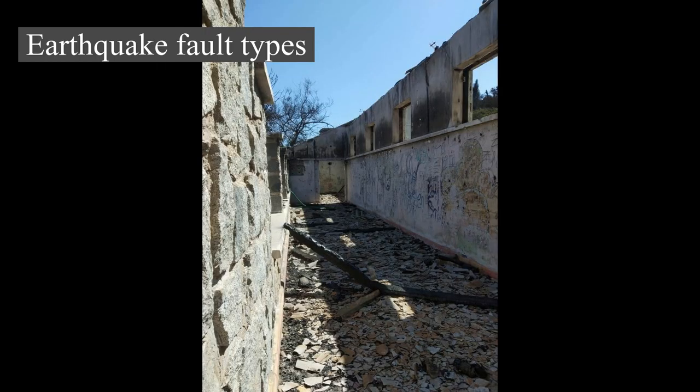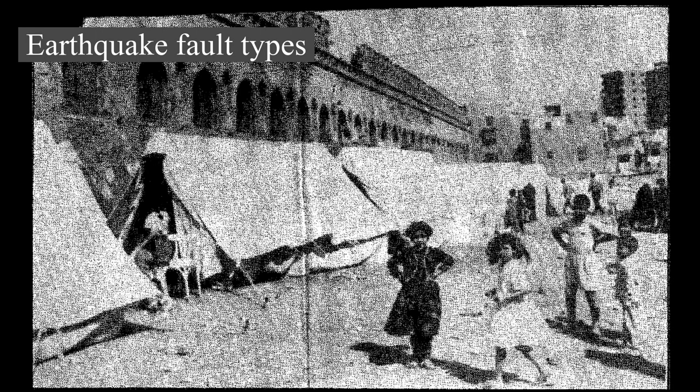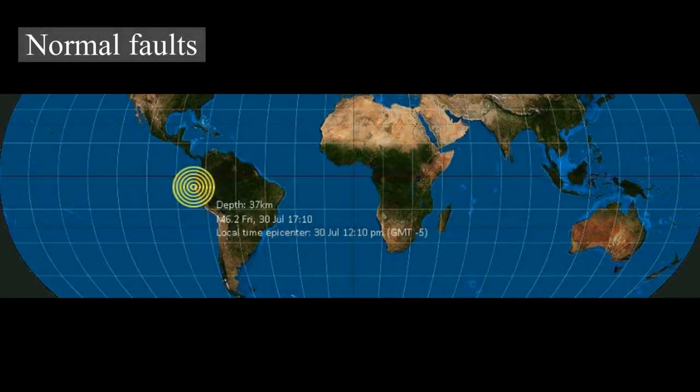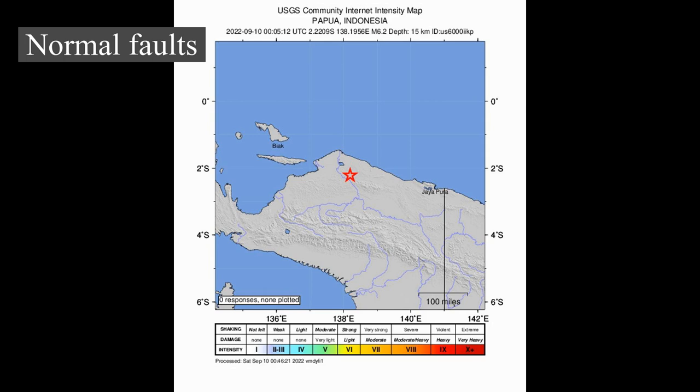The longest earthquake ruptures on strike-slip faults, like the San Andreas Fault (1906), the North Anatolian Fault in Turkey (1939), and the Denali Fault in Alaska (2002), are about half to one-third as long as those along subducting plate margins, and those along normal faults are even shorter. Normal faults occur mainly in areas where the crust is being extended, such as a divergent boundary, and earthquakes associated with them are generally less than magnitude 7. Maximum magnitudes are further limited along spreading centers like Iceland, where the brittle layer is only about 6 km (3.7 mi) thick.